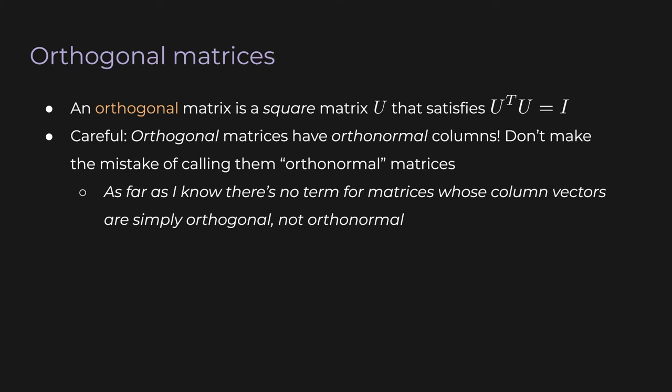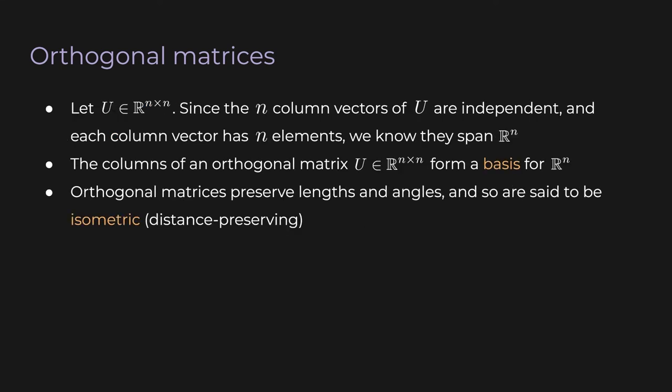Don't make the mistake of calling them orthonormal matrices — that's not a correct term. As far as I know, there's also no term for a matrix whose columns are simply orthogonal but not orthonormal. That's okay, because orthonormal column vectors are much more useful and prevalent. Here's one important note: if u is a square matrix in R^(n×n), since the n column vectors of u are independent and each is an n-dimensional vector, we know the column vectors span R^n. This means the columns of an orthogonal matrix u in R^(n×n) form a basis for R^n.